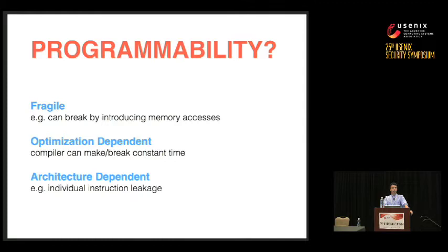This is not a good state of affairs. Ensuring constant time is very fragile: you can break your algorithm's security by inadvertently introducing new memory accesses. It's optimization-dependent — code that appears constant time at the C level can become non-constant time at the assembly level, and the compiler has no knowledge that you want constant-time behavior and won't factor that into optimizations. The property is also very architecture-dependent, depending on the semantics of instructions like division at the machine level.